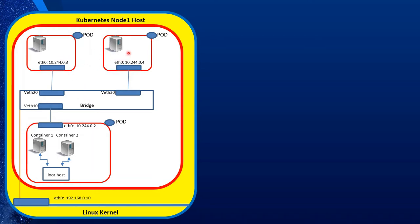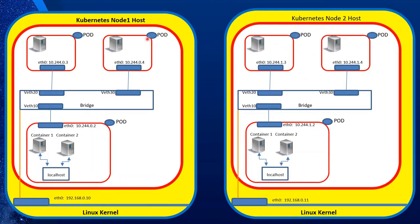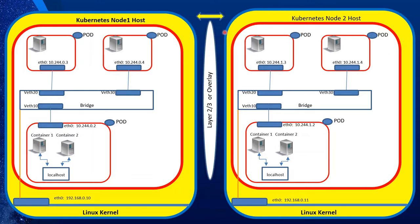All pods on the same node — if one pod wants to communicate with another pod, it goes through the bridge. The bridge is also connected to the interface of the node so they can communicate with the outside world. When we have two nodes with pods replicated across them, pods on the same host communicate through the bridge. However, if a pod wants to communicate with a pod on the other node, it usually goes through an overlay network. The overlay network hides the complexity of networking between the two nodes and gives the appearance that they are on the same network.